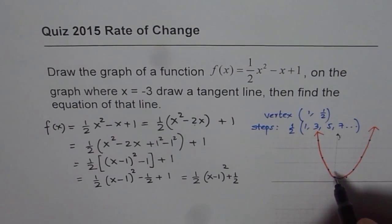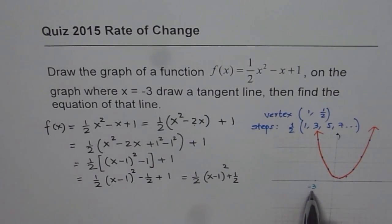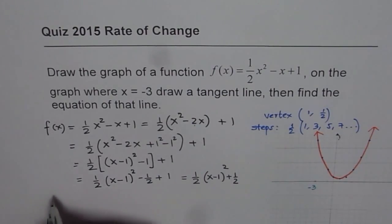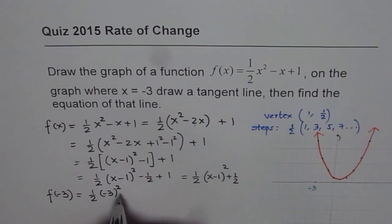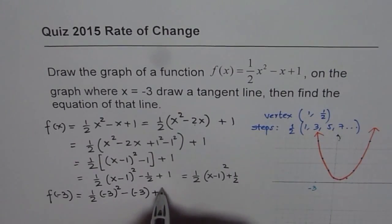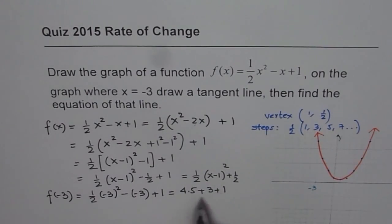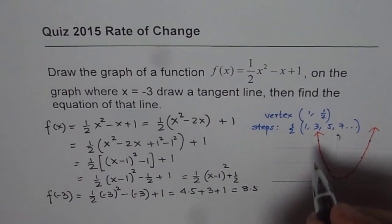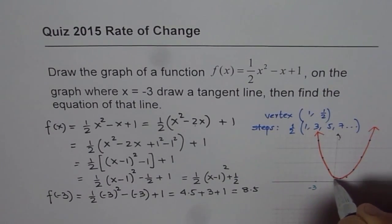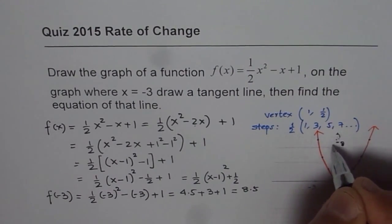Now what we need to do is draw a tangent line at minus 3, correct? So it is a good idea to calculate the exact value of the function at minus 3. So what is the value of the function? So we say f(-3) is equal to 1/2 of (-3)² minus of (-3) plus 1, right? Which is 1/2 of 9, which is 4.5, correct? Plus 3 plus 1. And that is 8.5. So 8.5 is our point here. So this point is at 8.5. So let me write down. So let's check, 1, 2, 3, 4, 5, 6, 7, 8.5. That is correct. So this point is 8.5.